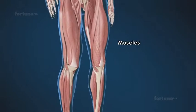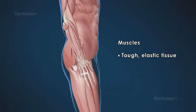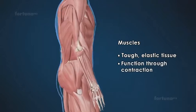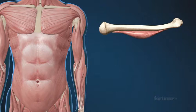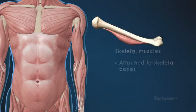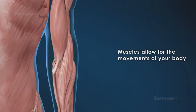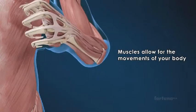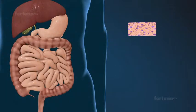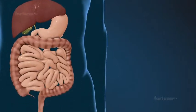Muscles are masses of tough, elastic tissue that pull bones when we move and function through contraction. Skeletal muscles are attached mainly to skeletal bones, held to them through the aid of tendons. These muscles allow for the movements of your body. Smooth muscles are found in the digestive system within the oesophagus, stomach and intestines.